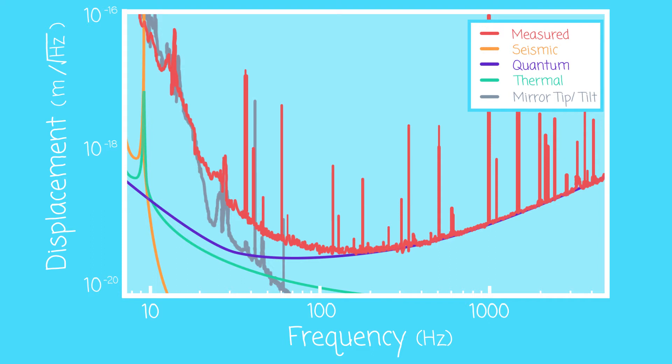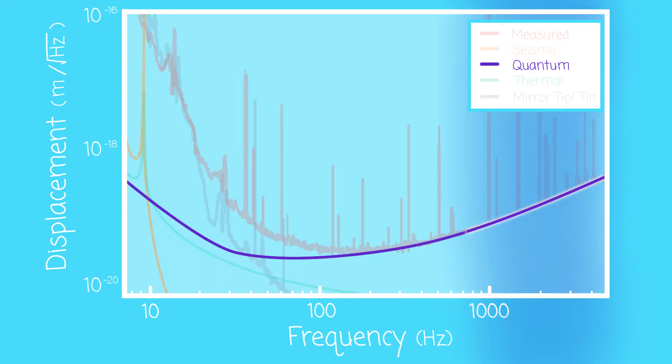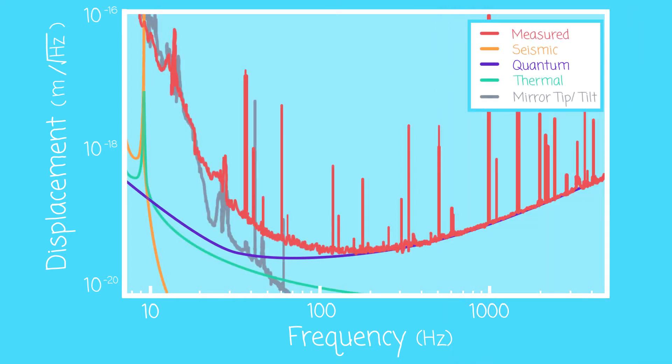At high frequencies, the dominant effect is from quantum noise. This is because we are limited by how well we can measure the brightness of the laser beam. This can be improved by turning the power of the laser beam up. LIGO is more sensitive to signals between a few tens of hertz and a few hundred hertz.